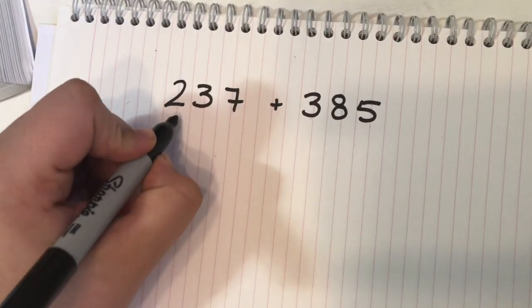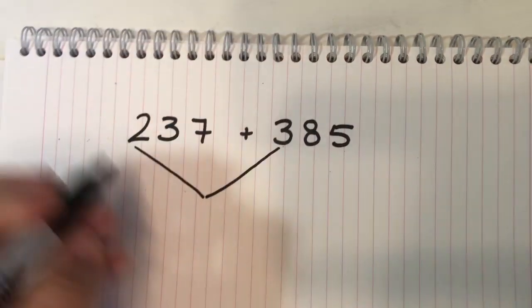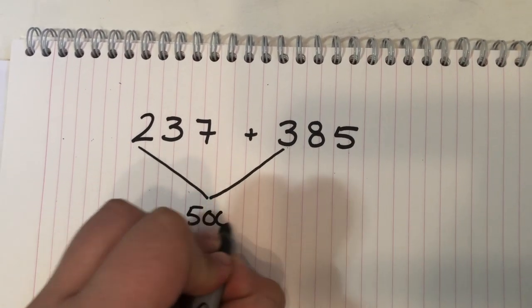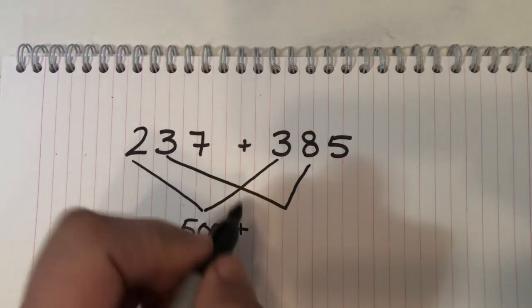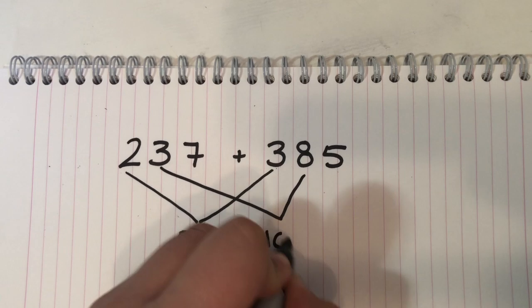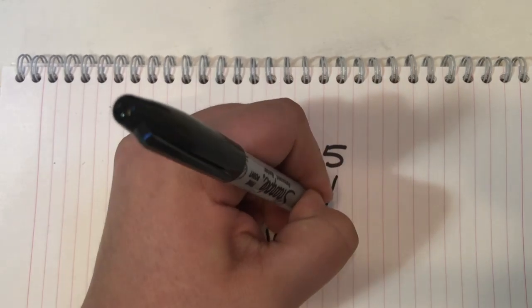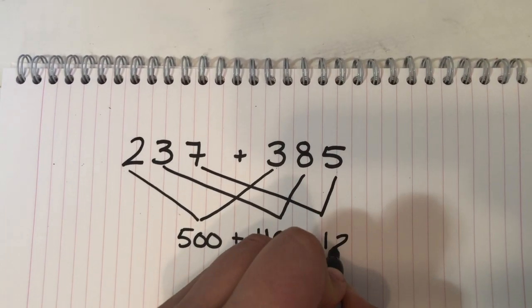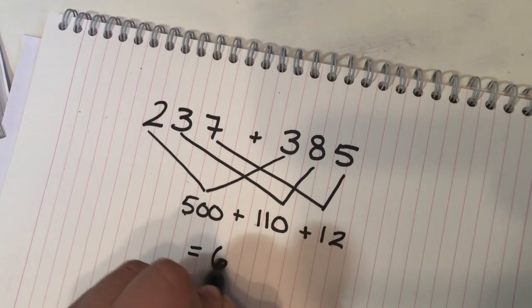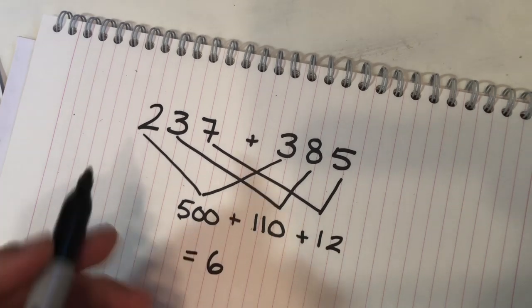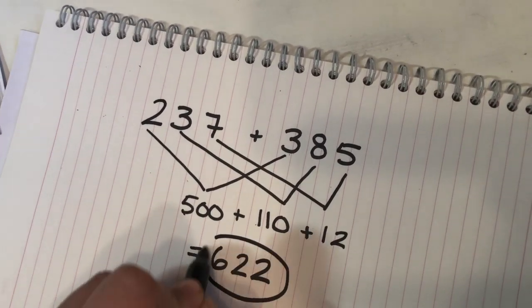So what we're going to do is take the 200 and the 300 and add that together, which equals 500. Then we're going to add the 30 plus the 80, which equals 110, plus the 7 and the 5, which equals 12. So 500 plus 100 equals 600, 10 plus 10 equals 20, and then add the remainder, which equals our answer.